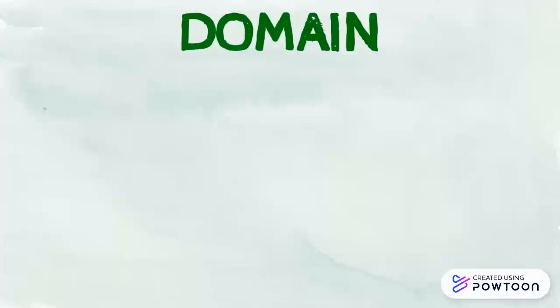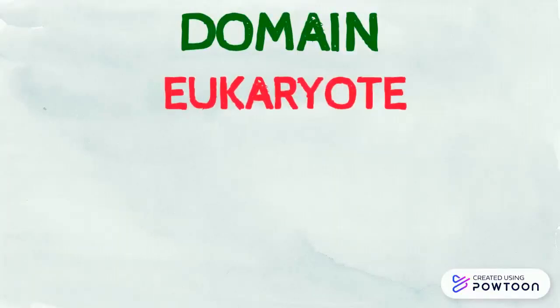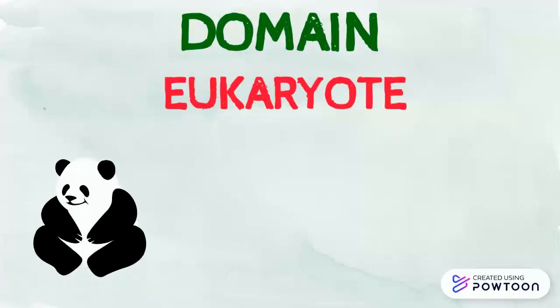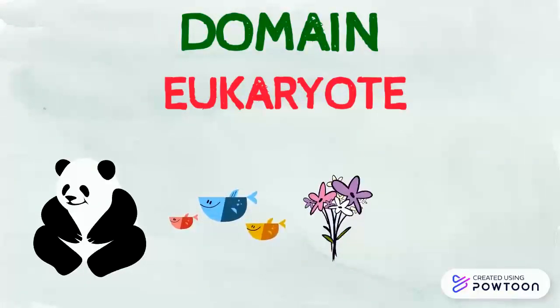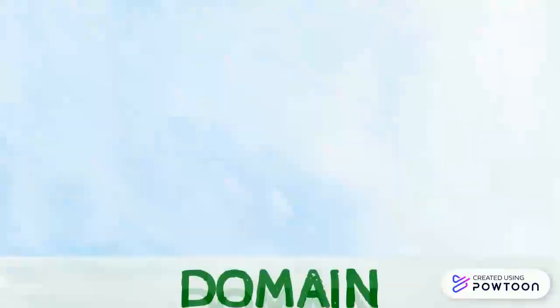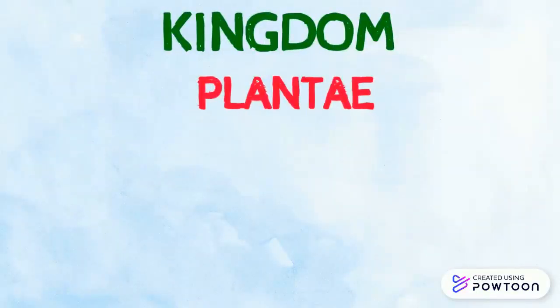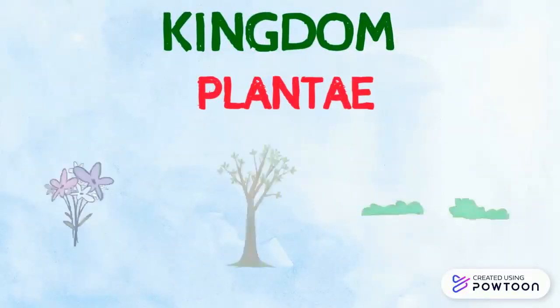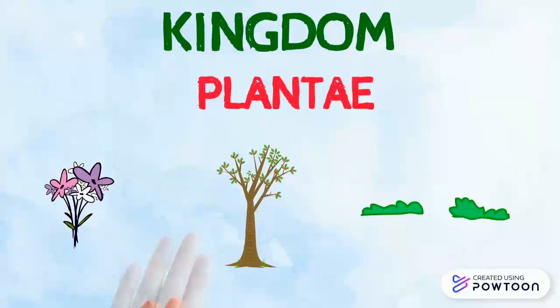To classify Marchantia, we first need the domain, which is eukaryote. This domain includes any organism with complex cells, like bears, fish, certain types of flowers, and even humans. Next we need the kingdom, which is plantae. This includes all plants, like the name.